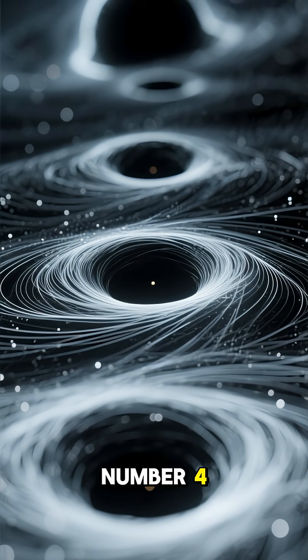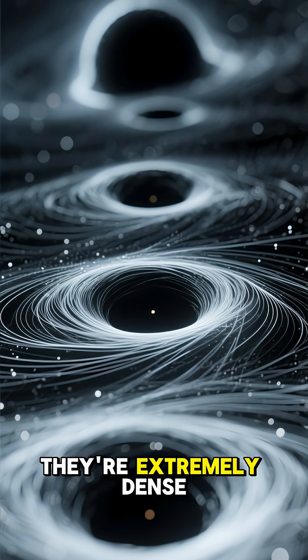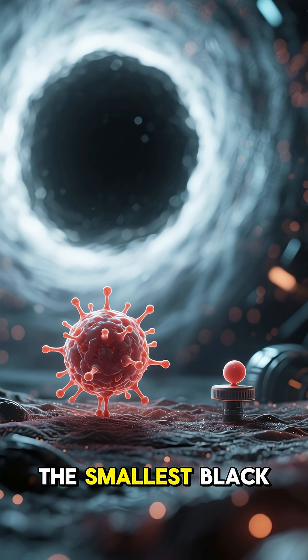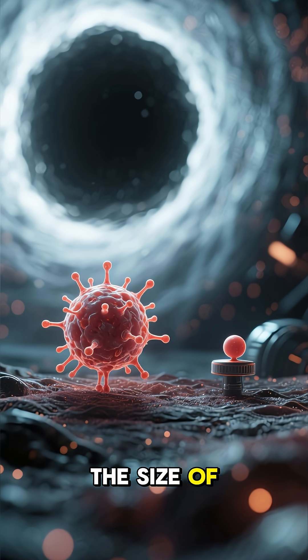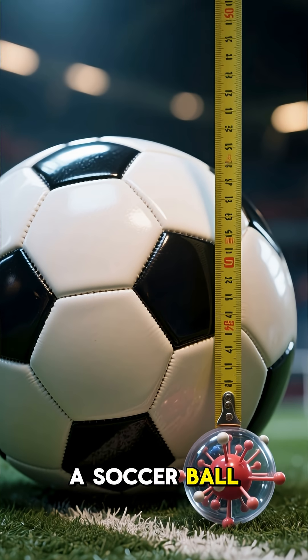Number 4. Black holes can be big or small, but they all have one thing in common. They're extremely dense. The smallest black hole is about the size of a proton. That's one million times smaller than a soccer ball.